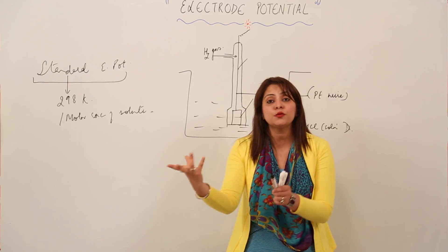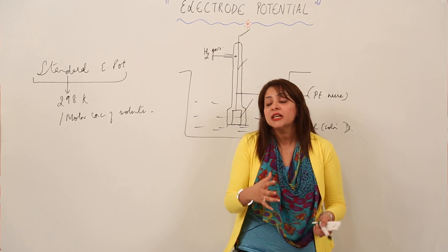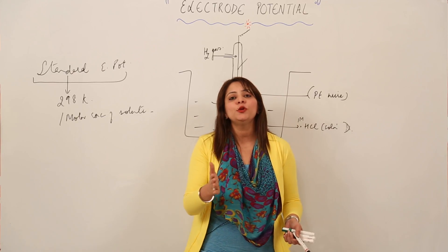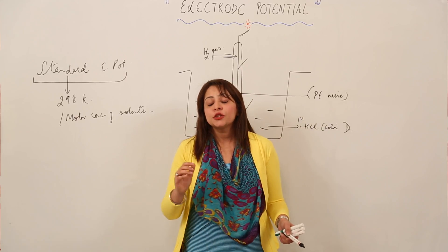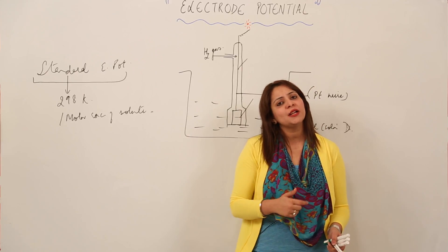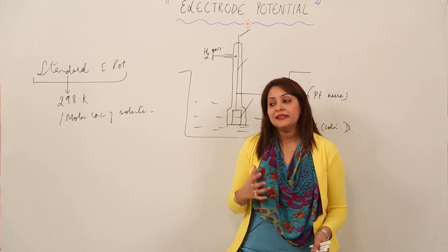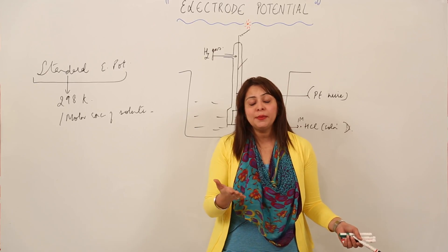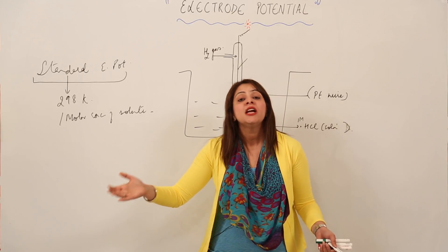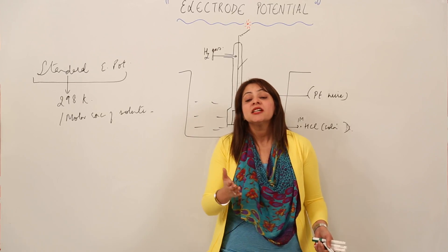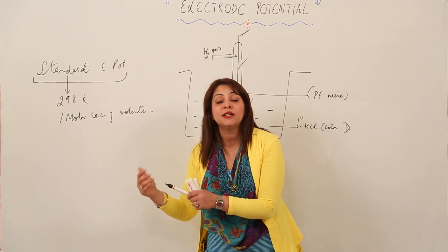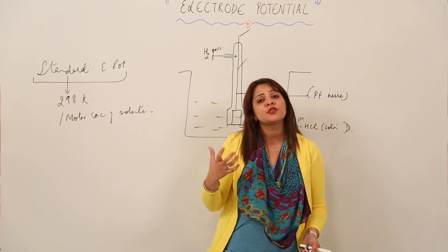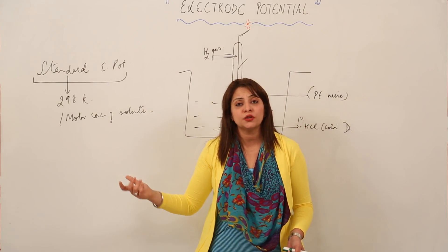We need to relate the electrode to some other electrode to determine its tendency to get oxidized or reduced. The absolute value cannot be calculated in any case. This raises the question: how are we going to know the electrode potential value, and how will we decide whether an electrode acts as an anode or cathode in a given couple?